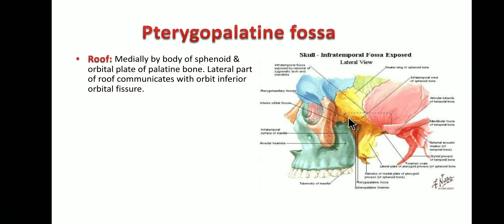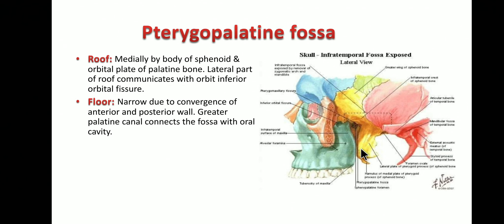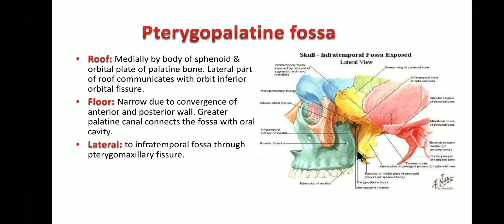The roof of the fossa is formed medially by the body of the sphenoid and the orbital plate of the frontal bone; some books also include the perpendicular plate of the palatine. The floor is narrow due to approximation of the anterior and posterior walls. Superiorly, the inferior orbital fissure transmits the infraorbital nerve, which emerges through the infraorbital foramen. The floor contains the greater palatine canal and foramen, which communicates with the oral cavity transmitting the greater palatine vessels and nerves.